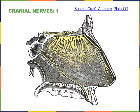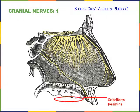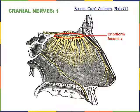Cranial nerve one travels through the cribriform foramina of the ethmoid bone. Branches of cranial nerve one travel through the numerous foramina in the cribriform plate and then synapse with neurons inside the olfactory bulb. Their function is sensory—to carry the sense of smell.